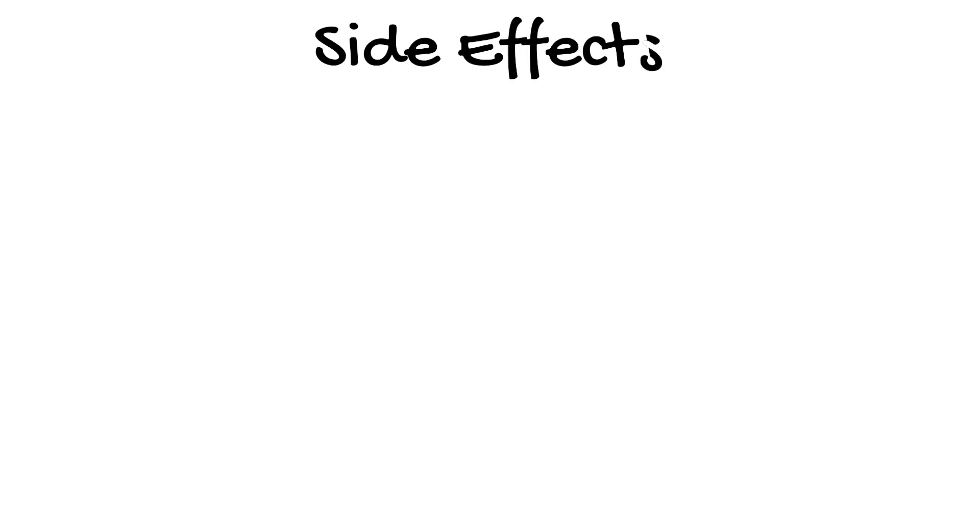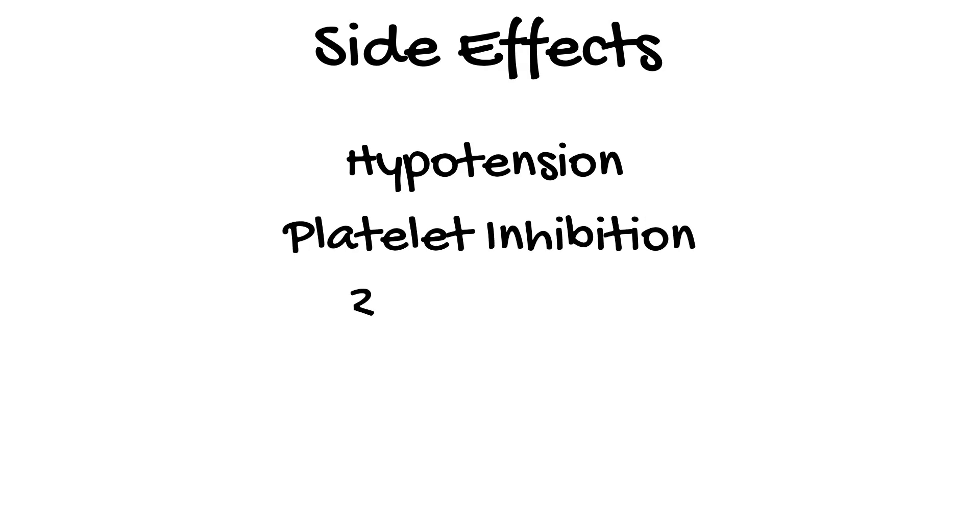The main side effects of nitric oxide include systemic hypotension, coagulopathy from platelet inhibition, and renal failure. Due to the formation of methemoglobin from metabolism, methemoglobin values should be monitored, particularly if using high doses. When nitric oxide is ceased abruptly, it can cause rebound pulmonary hypertension. This is why it should be gradually weaned over several hours.